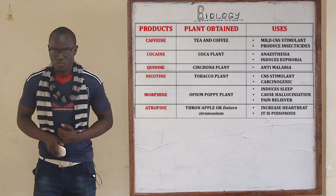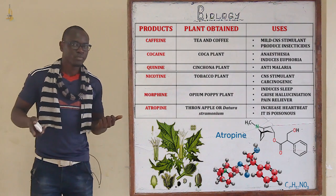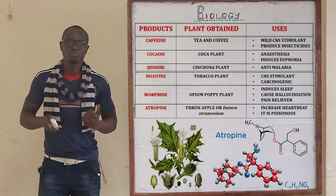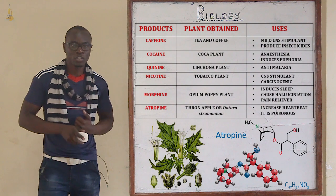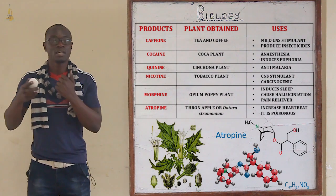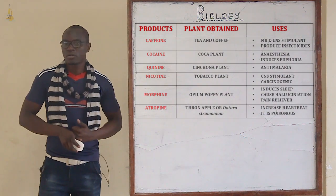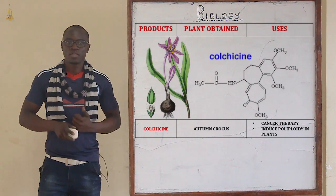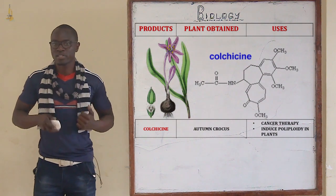Atropine is obtained from the thorn apple plant, commonly referred to as datura, with the scientific name Datura stramonium. Its functions include increasing the heartbeat, and it is also highly poisonous. Colchicine is obtained from the autumn crocus plant and is used as cancer therapy; it also induces polyploidy in plants.